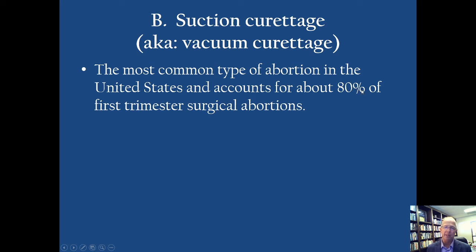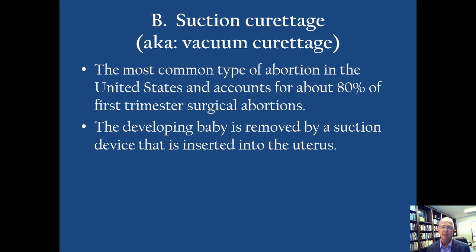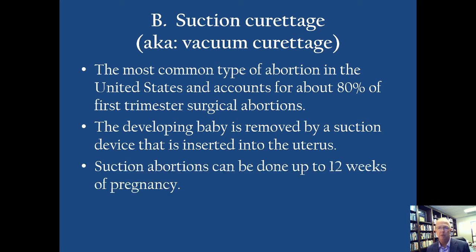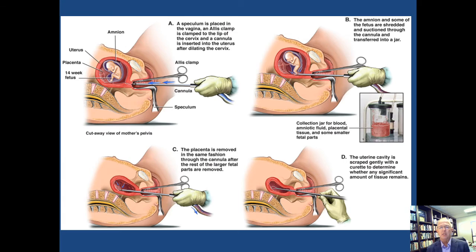The number 80% shown on a previous slide is old data — I have it corrected on another slide. The developing baby is removed by a suction device inserted into the uterus — about 28 times stronger than the vacuum you would use to clean your car or carpet. Suction curettage can be done usually up through 12 to 13 weeks — these are first trimester abortions, not late-term abortions. The woman's cervix is dilated, the suction piece is placed into the womb, and the baby is sucked out. A curette is then used to make sure all the pieces of the baby are removed, and the remains go into a jar. You can see arms, legs, torso, and other small pieces. It is horribly violent — a small human life is sucked to pieces.